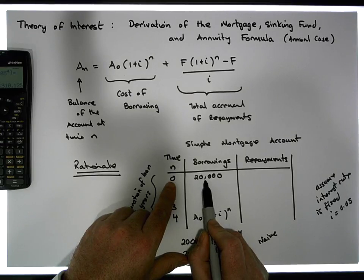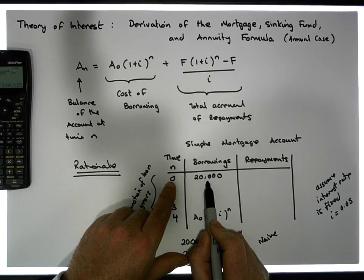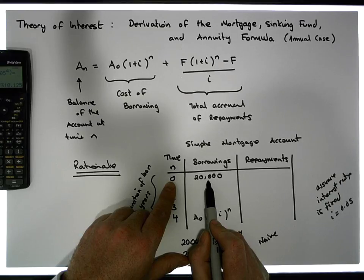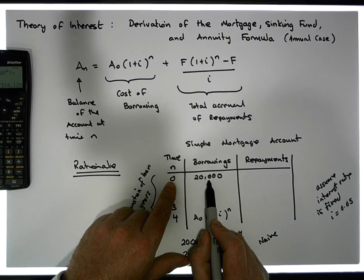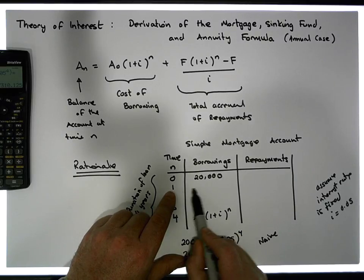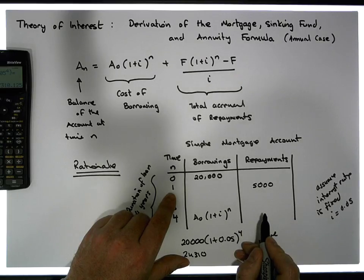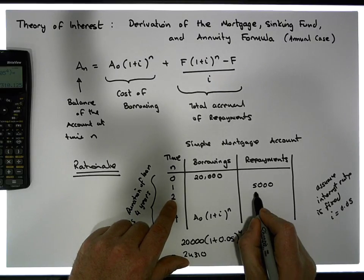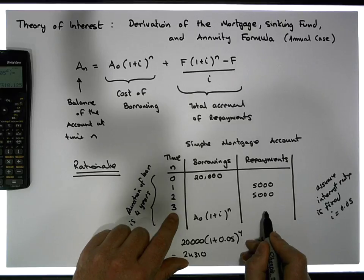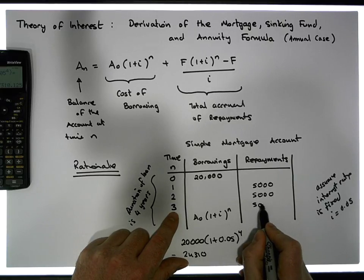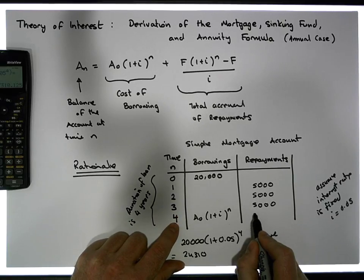I initially borrow twenty thousand euros at time zero. I don't make any repayments when I take the borrowing out, because I haven't had the money for any amount of time. I only start payments after the money has been out for a period of time. After one year I repay five thousand euros, after two years another five thousand, after three years another five thousand, and after four years another five thousand euros.